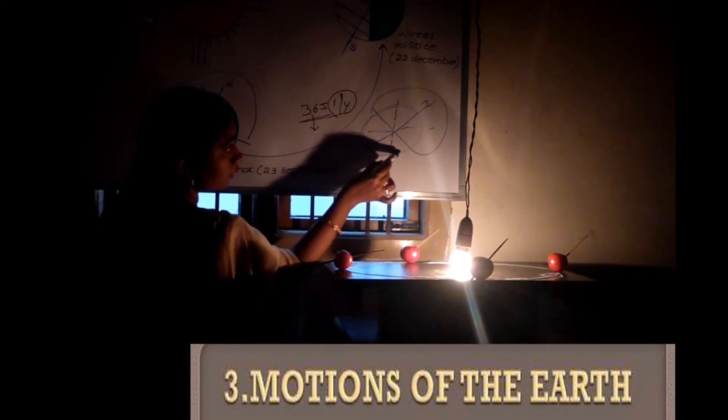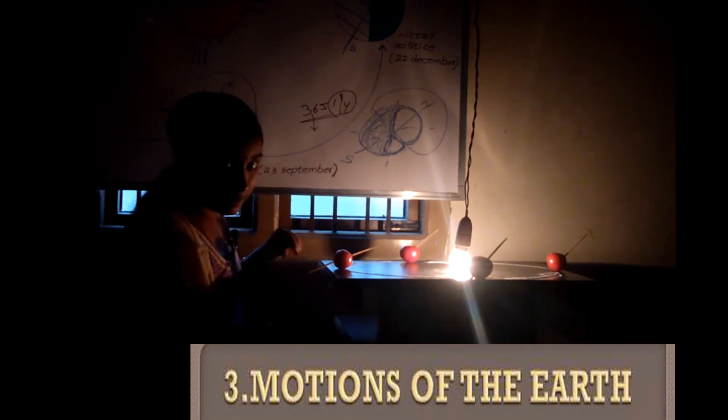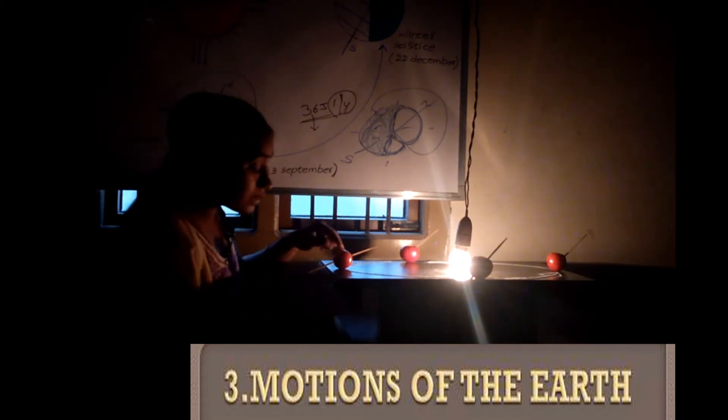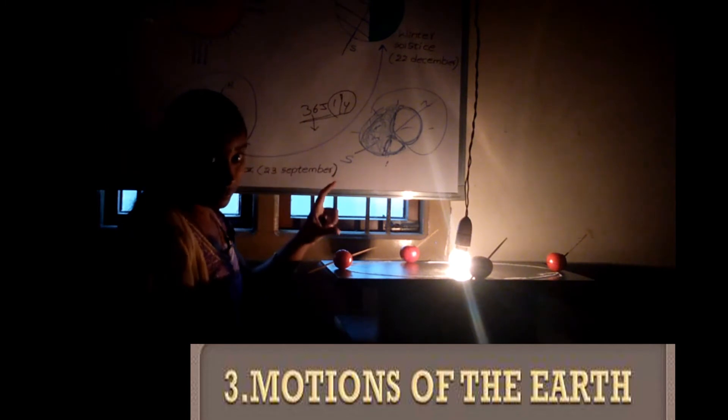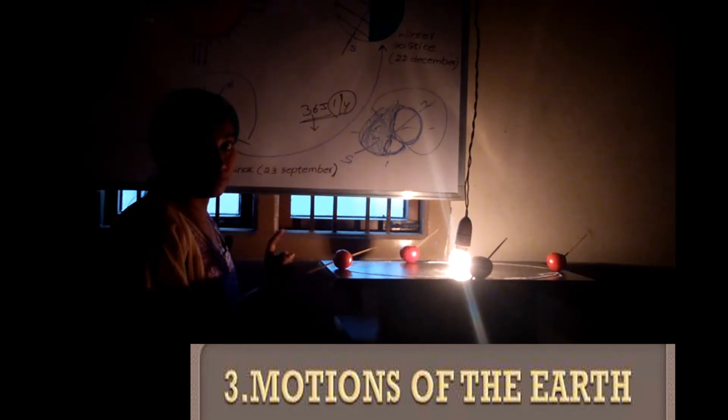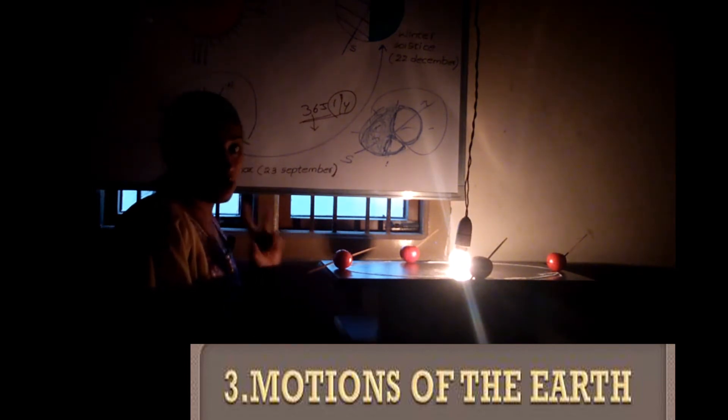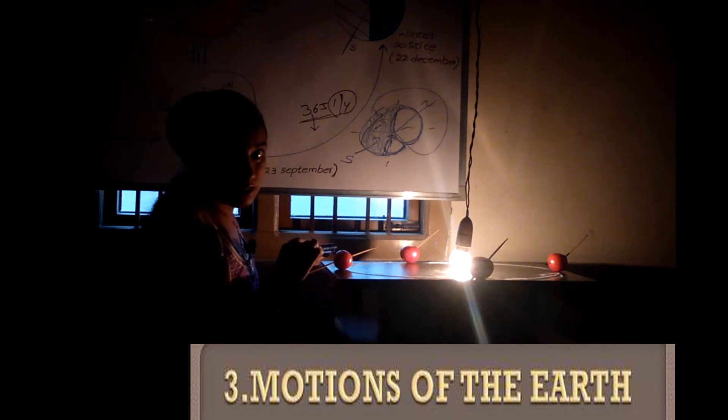The north side and the south side — the axis is such that half of the part is in light. The northern hemisphere receives more sunlight than the southern hemisphere. The northern hemisphere has the longest day and the shortest nights. This is the summer solstice.